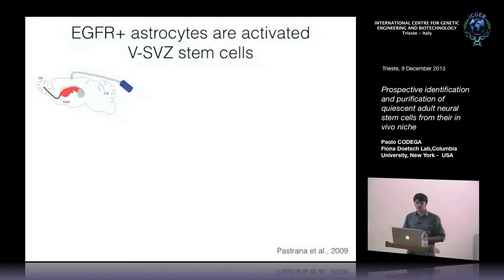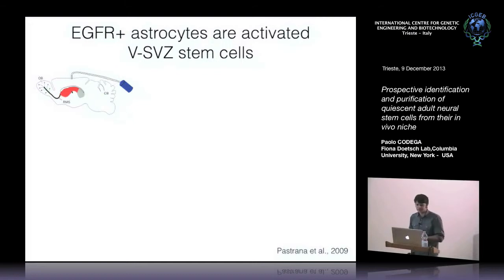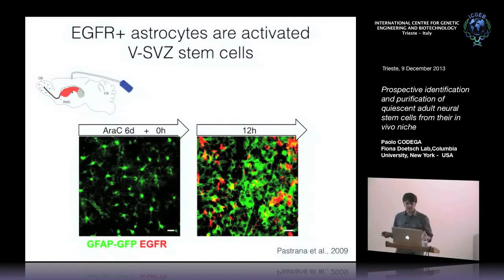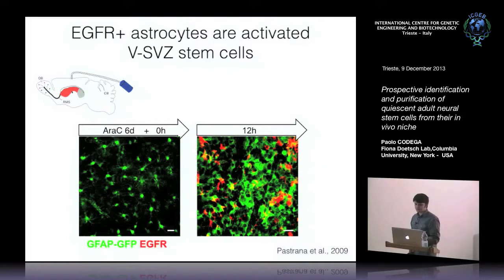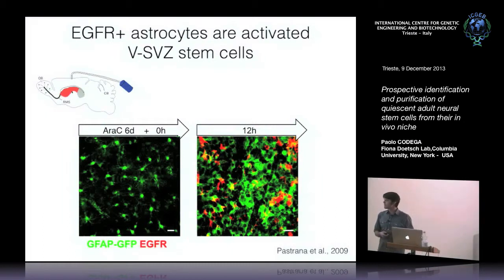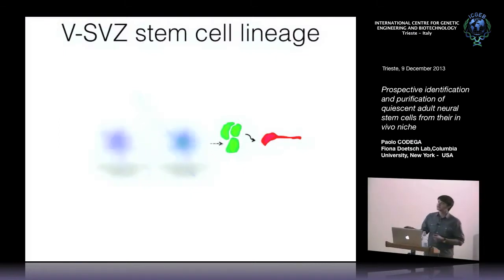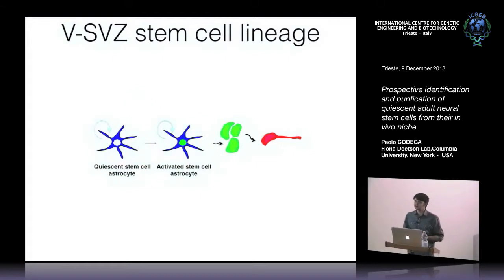Moreover, Erika Pastrana, a former postdoc in the lab, found that EGF receptor was also expressed by a subset of astrocytes. By infusing AraC, she found that EGF receptor positive, GFAP positive astrocytes were depleted after AraC treatment, meaning they are actively dividing. This population re-emerged after 12 hours following withdrawal, indicating that the stem cell population is composed of at least two subsets: one more quiescent and one so-called activated or dividing stem cell.